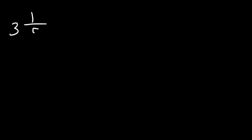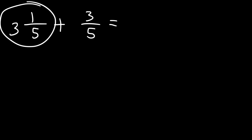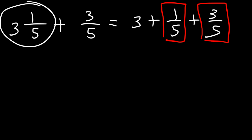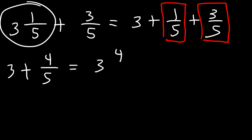Let's try a similar example: 3 and 1 fifth plus 3 over 5. We can expand this mixed number and write it as 3 plus 1 over 5 plus 3 over 5. 1 over 5 plus 3 over 5 is 4 over 5. And so the final answer is 3 and 4 fifths.